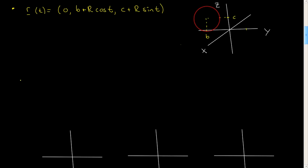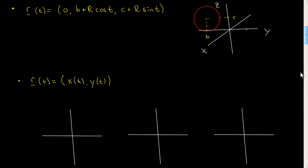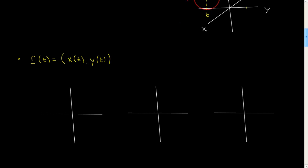I'll start by assuming that we have a parameterization of a curve — R of T in two dimensions — so I have X of T, Y of T. That is a parameterization of some curve, which I will now draw in bold here. Let's say it's that curve.